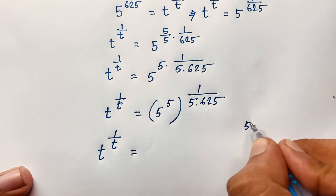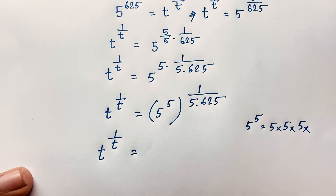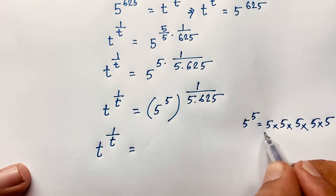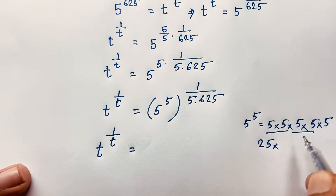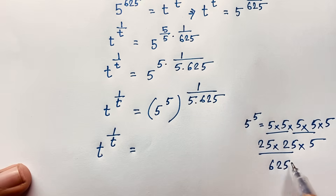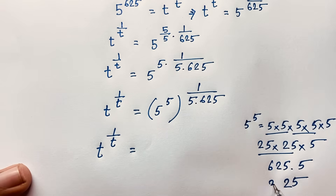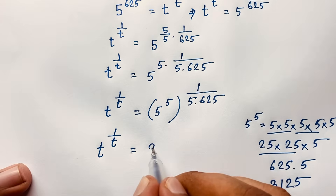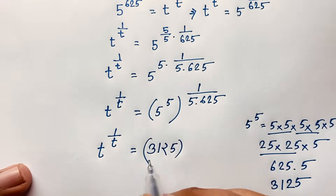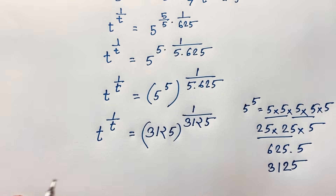Now, 5 to the power 5 equals 5 × 5 × 5 × 5 × 5. We calculate: 5 × 5 = 25, 25 × 5 = 125, 125 × 5 = 625, 625 × 5 = 3125. So t to the power 1 over t equals 3125 to the power 1 over 3125.